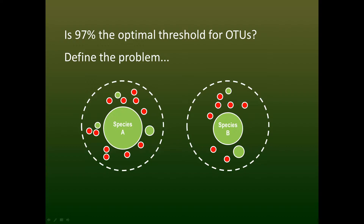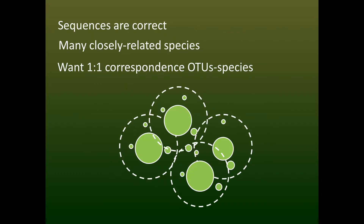Errors can be handled in a separate processing step, for example by denoising, and it's not reasonable to expect a single clustering algorithm to deal with different types of errors such as chimeras. So the input data is a set of correct biological sequences for many closely related species. We want a one-to-one correspondence between OTUs and species as far as possible. Since this is impossible to achieve in general, the best we can do is to achieve an even balance between lumping multiple species into one OTU and splitting a single species across different OTUs.